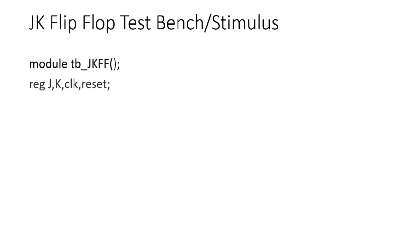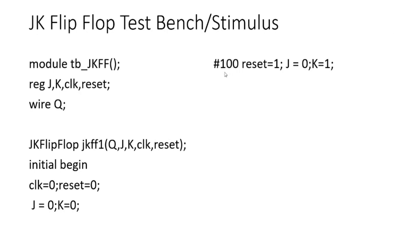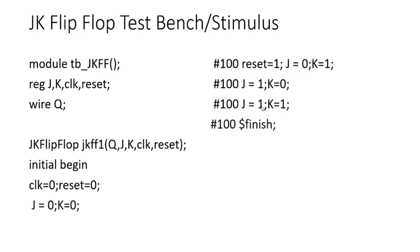For the test bench, we start by declaring all input ports as register type and all outputs as wire type, then instantiate the flip-flop. Within the initial begin block we initialize the clock and reset to 0, and then test all possible combinations of J and K. When J is 0 and K is 0 the output should show no change. After 100 time units we make reset high, then give other combinations of J and K to verify the truth table.